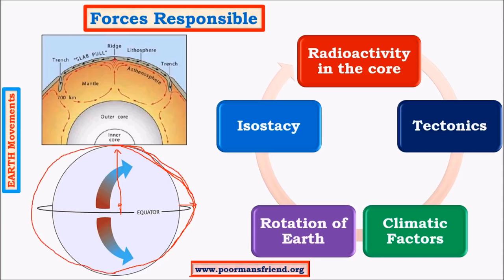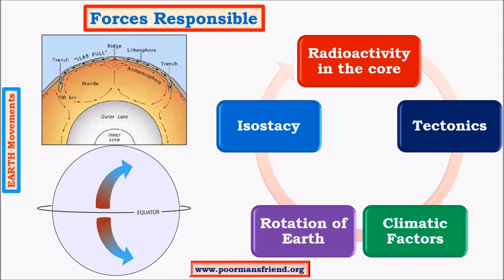Rotation of the earth is the major reason for the geoid shape of earth. Coriolis force mainly results in the formation of cyclones, which change weather patterns on the earth's surface, in turn resulting in differential erosional and depositional processes. Thus even Coriolis force is important in influencing earth's movements.